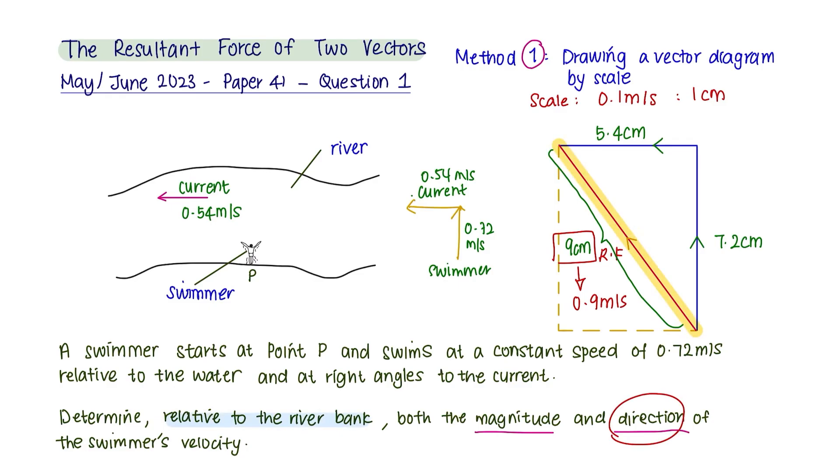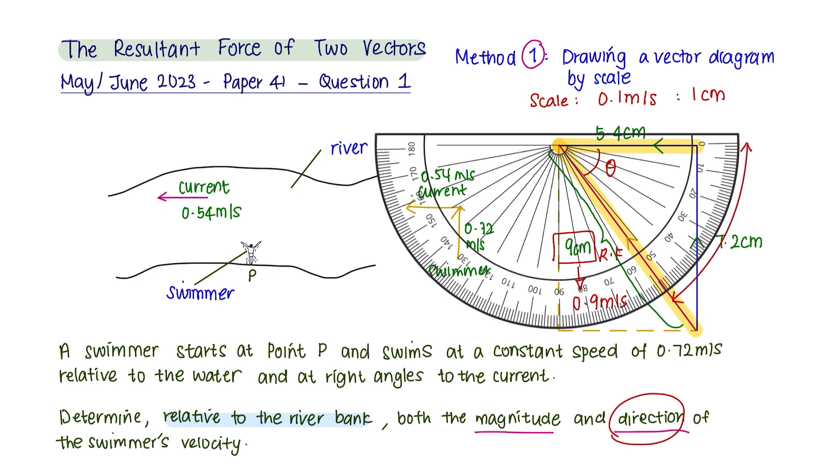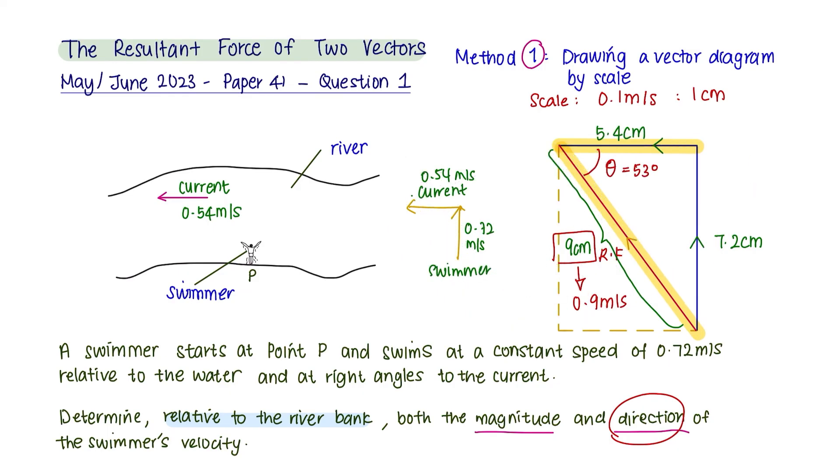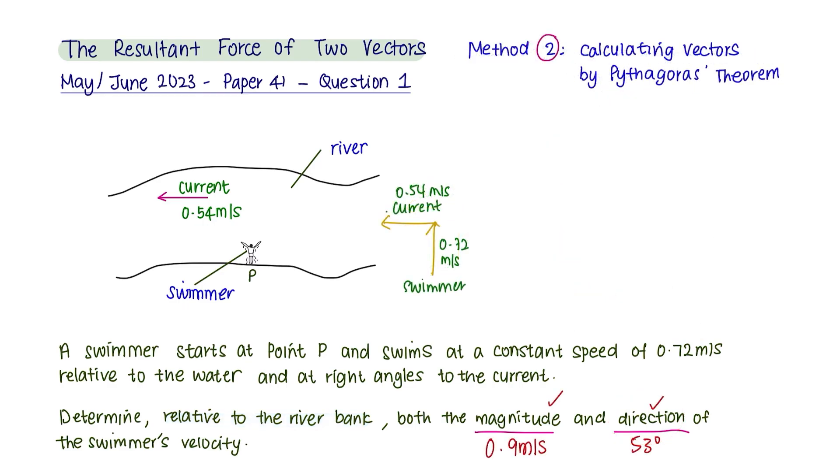This is the direction of the swimmer and this is the current flow that is pushing the swimmer from right to left. So to find the direction, we are going to look for the angle over here. To do this, place your protractor accordingly and you will get an angle approximately 53 degrees here. Now let's apply the second method and see if we get a magnitude of 0.9 meters per second and 53 degrees.